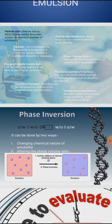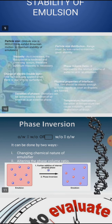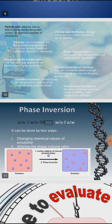An optimum degree of size dispersion range should be chosen to achieve maximum physical stability. If the size of globules is not uniform, smaller globules will occupy the void space between the larger globules. This type of closed packing induces greater cohesion of globules, increasing cohesive energy, which leads to coalescence. Size distribution analysis is a common procedure in the evaluation of physical stability of emulsion.